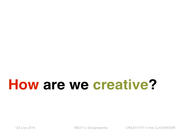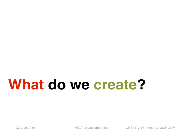After who is creative, the next question is: how are we creative? Writing is creative, painting is creative, modeling, making, speculating, proposing — they said imagining, and they talked a lot about ideas. Storytelling — that's a good one.